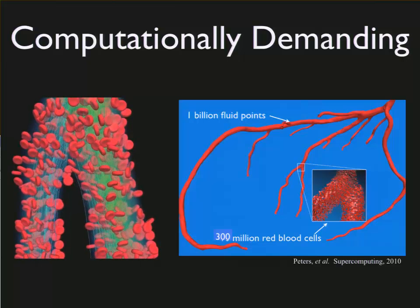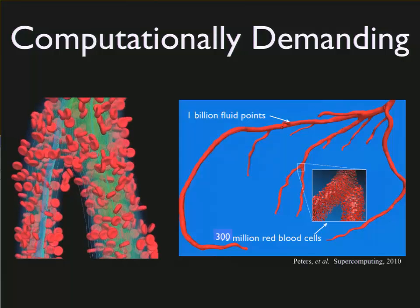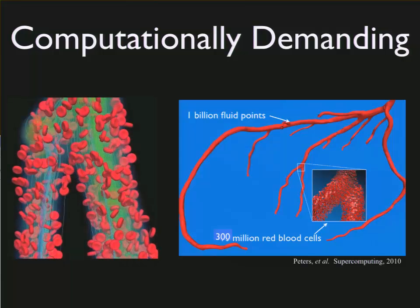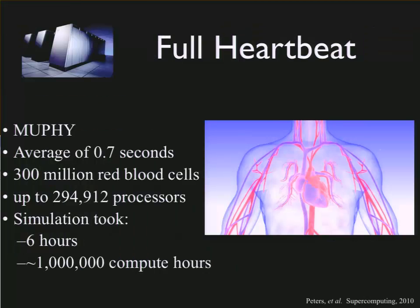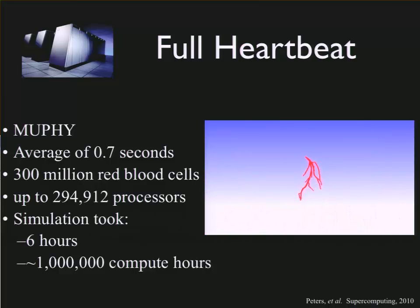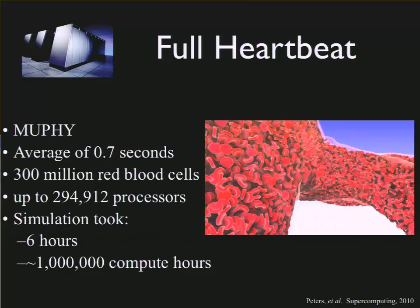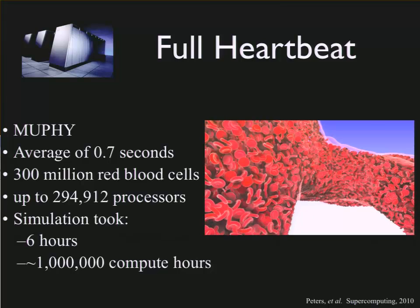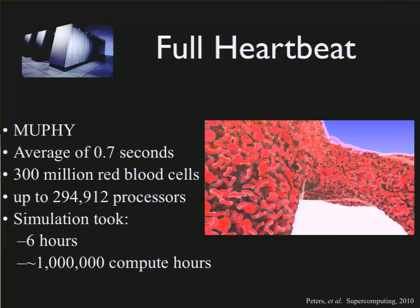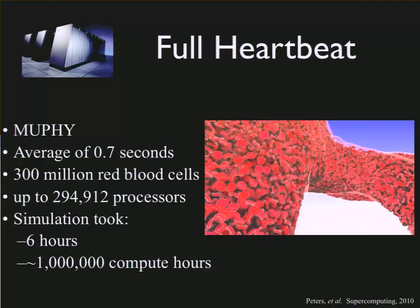This is extremely computationally demanding. The video playing here is only with about 10 percent hematocrit; in real physiological values you're going to have four to five times as many red blood cells in the fluid flow. When we modeled just the 12 main coronary arteries on the left side of the heart, it took 300 million red blood cells and 1 billion fluid points. We scaled it up to about 300,000 processors at Jülich in Germany on the IBM Blue Gene/P to get a full heartbeat running for this geometry. It took six hours on the full Blue Gene/P system — about a million compute hours for one heartbeat — which wasn't really feasible for regular clinical use. So we decided to focus on optimizing just the fluid piece and then go back later to add in the cells.